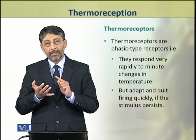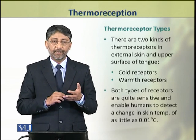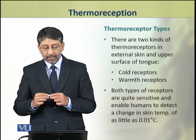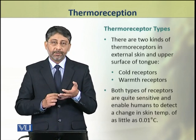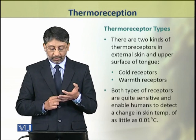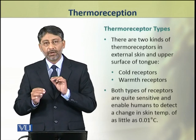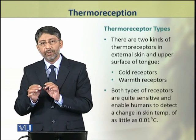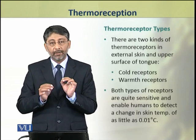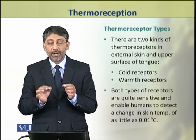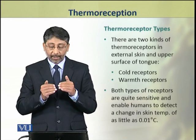Thermoreceptors are phasic receptors. There are two types of thermoreceptors present in the external skin and upper surface of the tongue. Both types are quite sensitive and enable humans to detect temperatures with great accuracy — their detection limit can be as low as 0.01 degree centigrade variation.